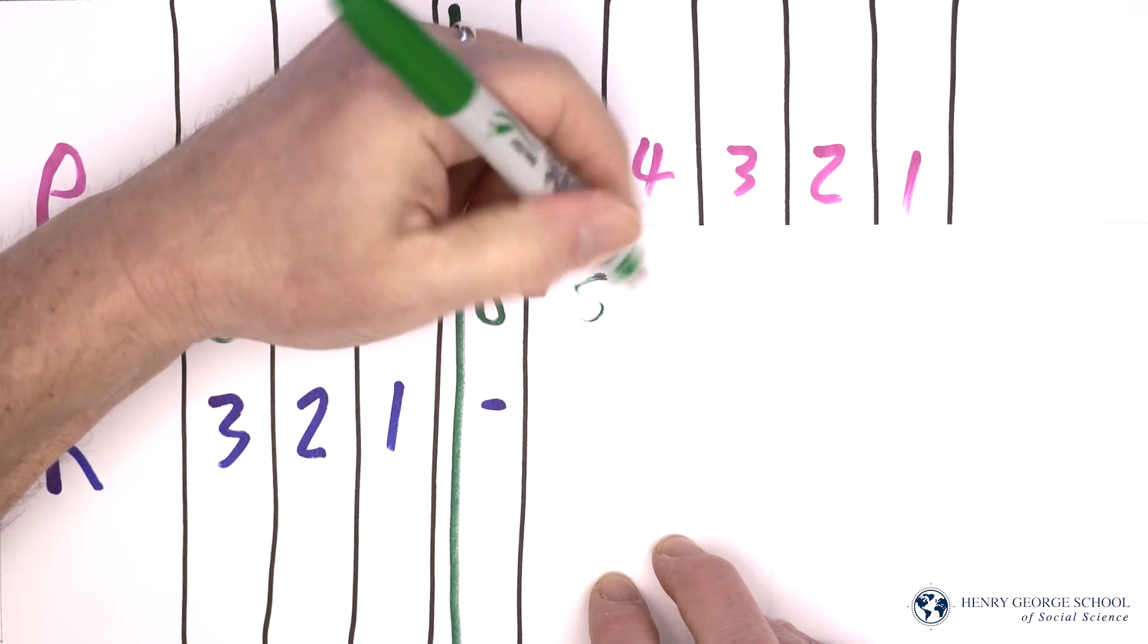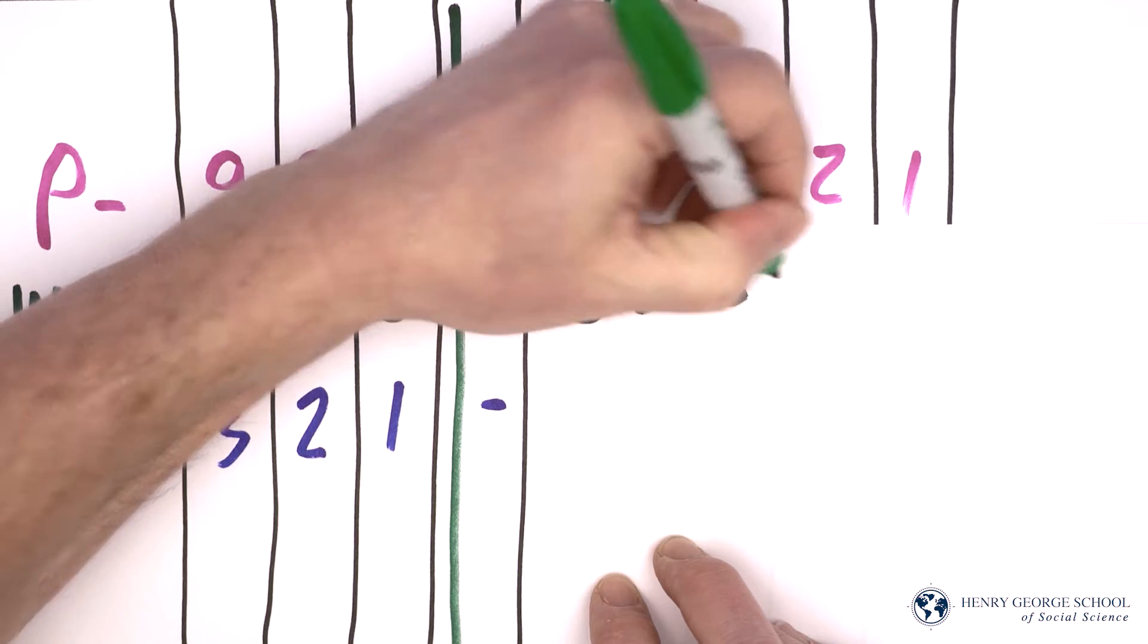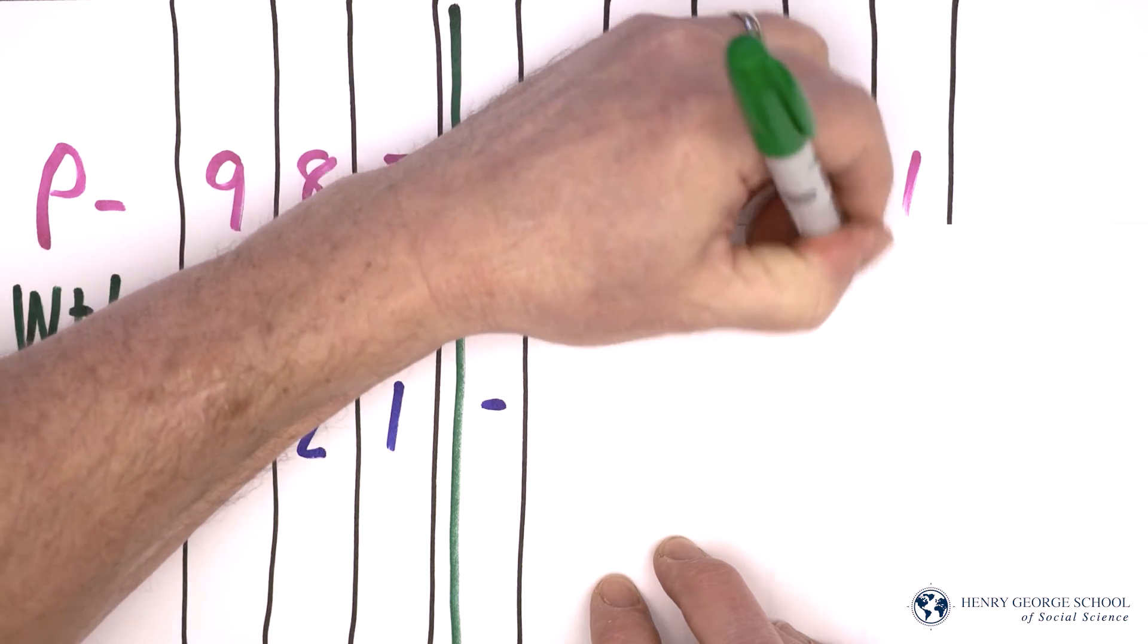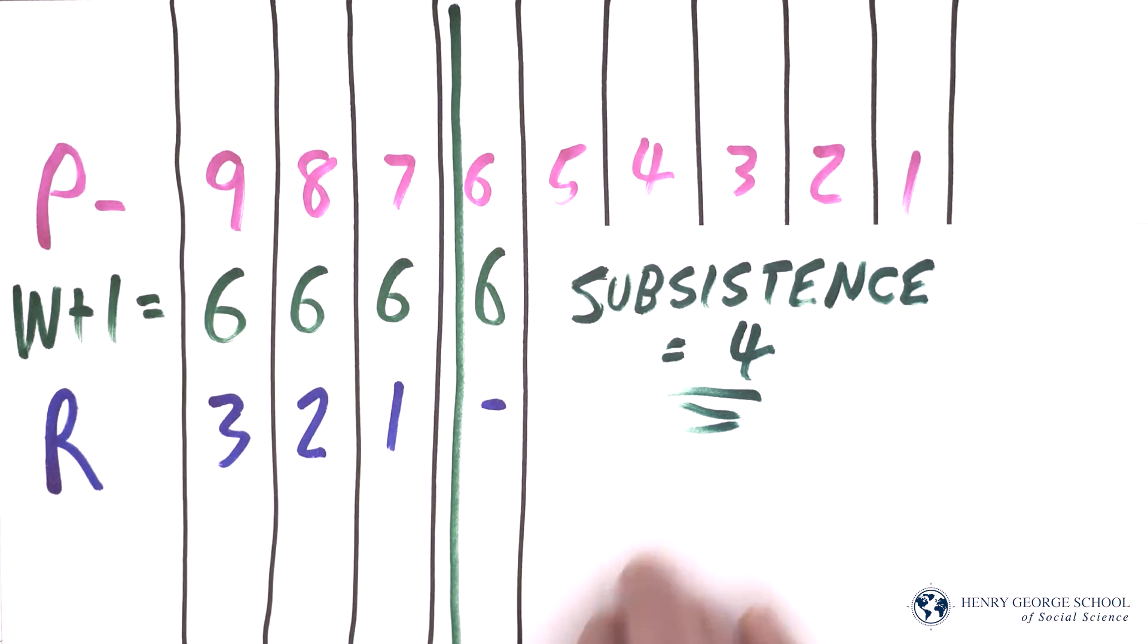Now initially we said that these numbers were arbitrary and just for comparison, but to give our comparison a little bit more context for some kind of reality, we're going to say that subsistence - the level of wealth that you need to keep a person alive for a unit of time, a year's time - equals four in our model. So for example, on the very best land at this fairly primitive level of development you can produce nine, which is more than subsistence, twice subsistence, but not a huge luxurious amount. So we'll keep in mind as we go forward in the model that bare subsistence in our model is four units of wealth.